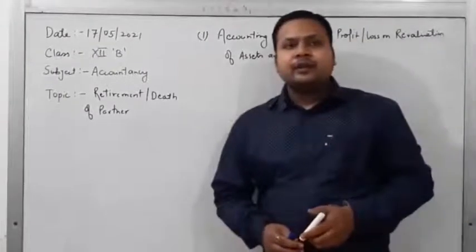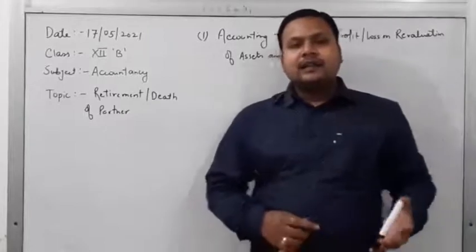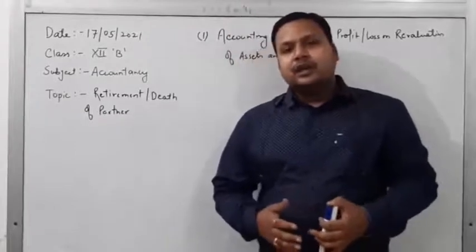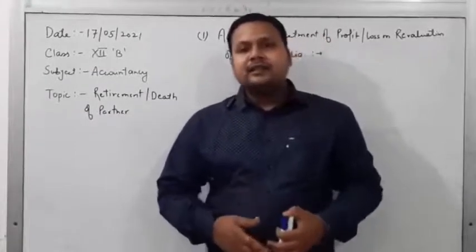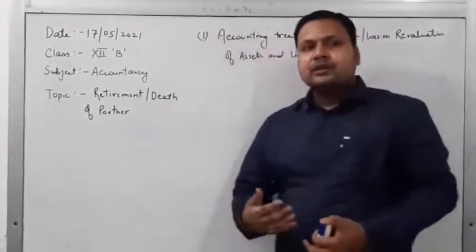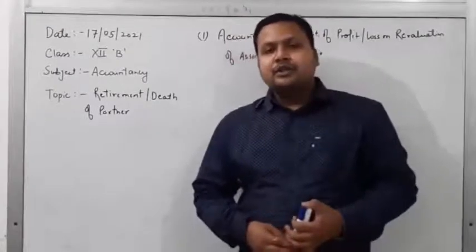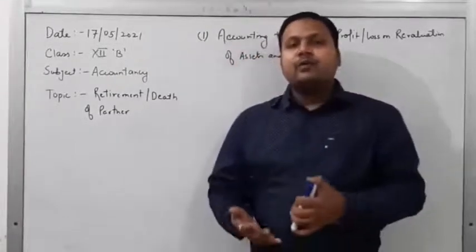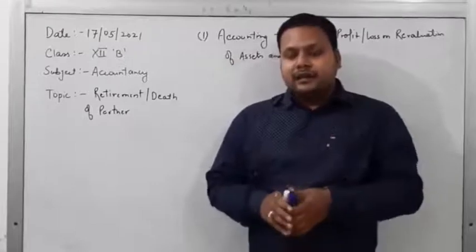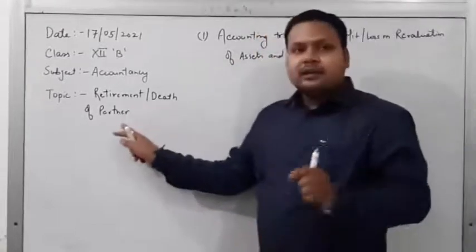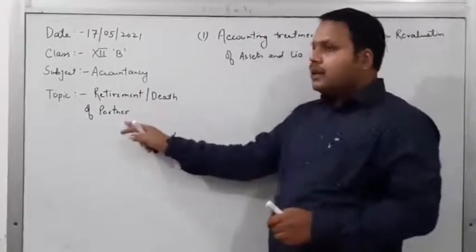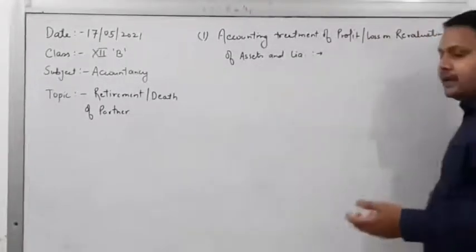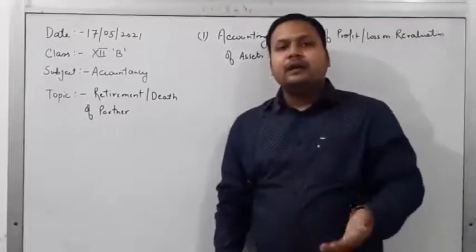You know very well from the last chapter - in the admission of a new partner, we have to revaluate the assets and reassess the liabilities of the firm. If there is any profit or loss arising due to the admission of a new partner, it will be written off by the old partners in their old ratio. Similarly, on the retirement or death of a partner, if any profit or loss on revaluation of assets and liabilities arises, it will be distributed by the old partners in their old ratio.